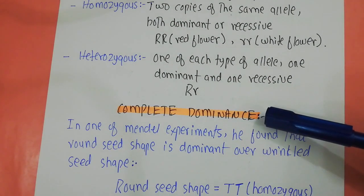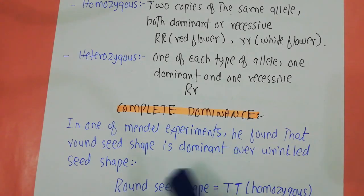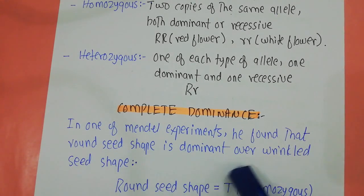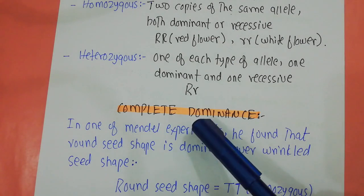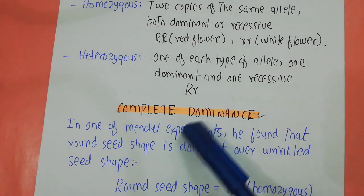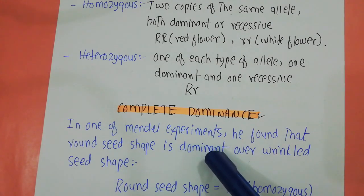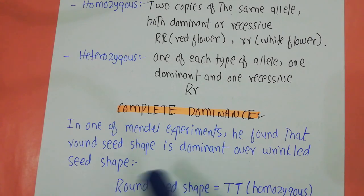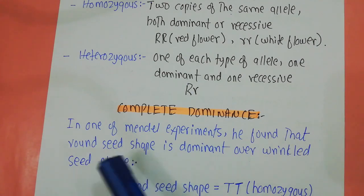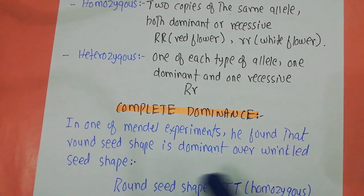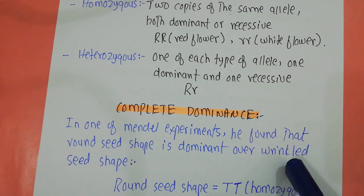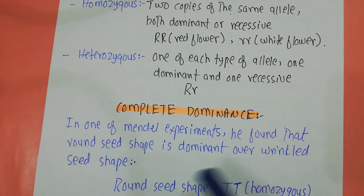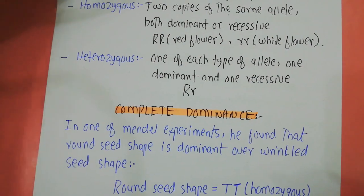Before going into incomplete dominance, you should understand complete dominance. In one of Mendel's experiments, he found that the round seed shape of the pea plant is completely dominant over the wrinkled seed shape. The seed comes in two varieties — round or wrinkled — and he observed that the round shape is completely dominant over the wrinkled shape.